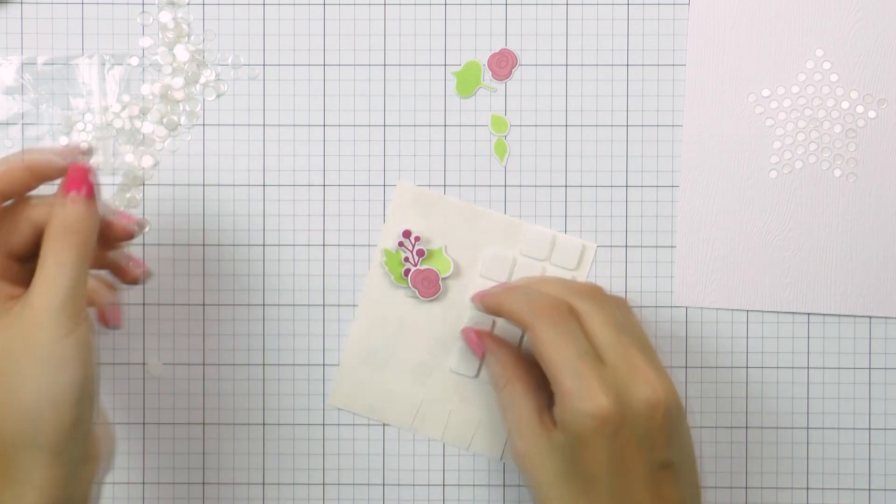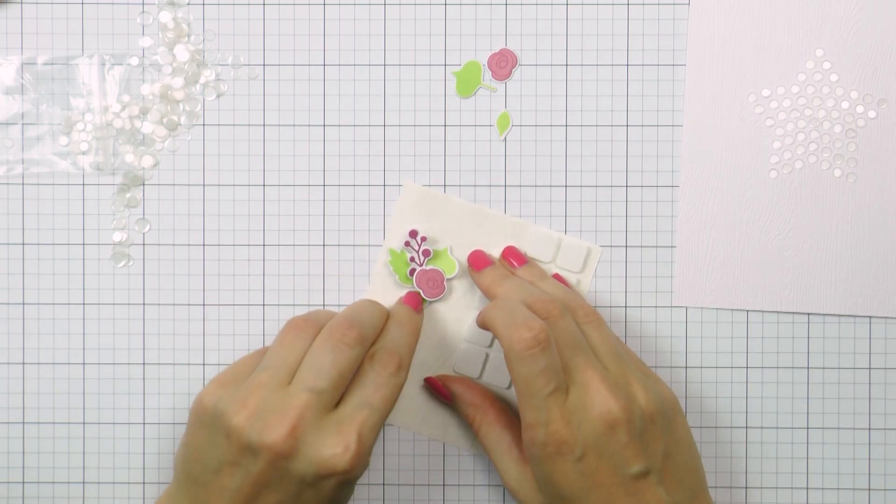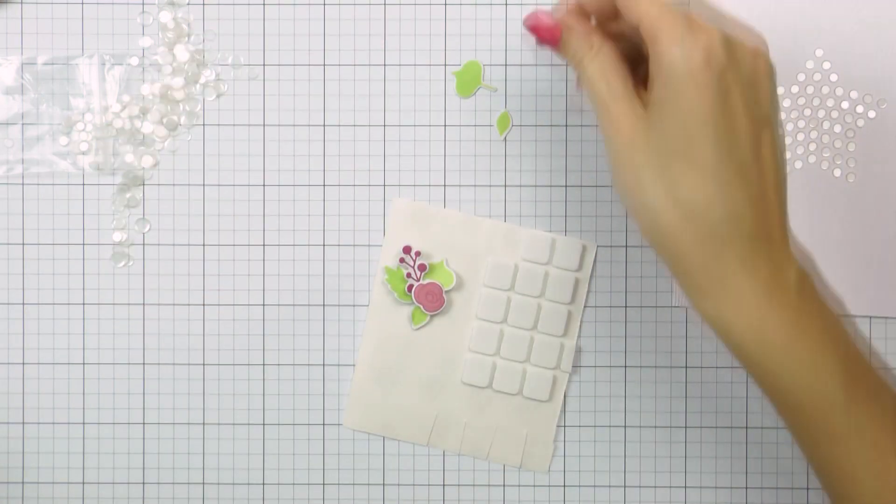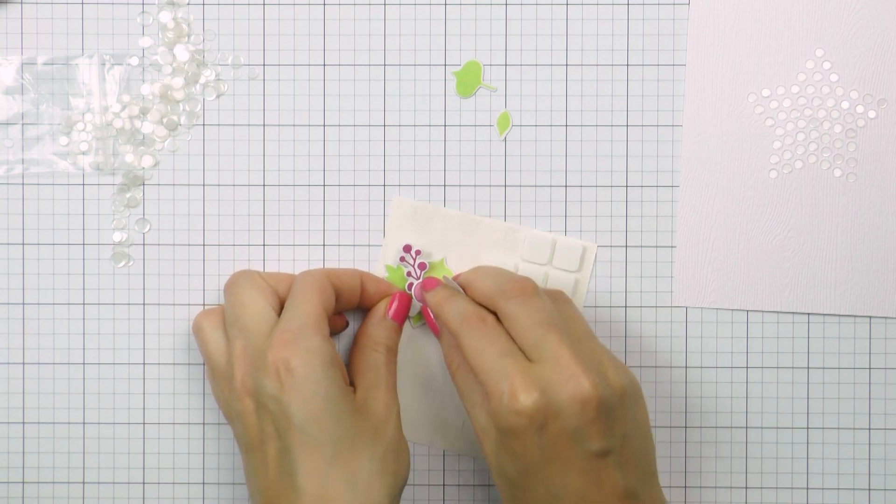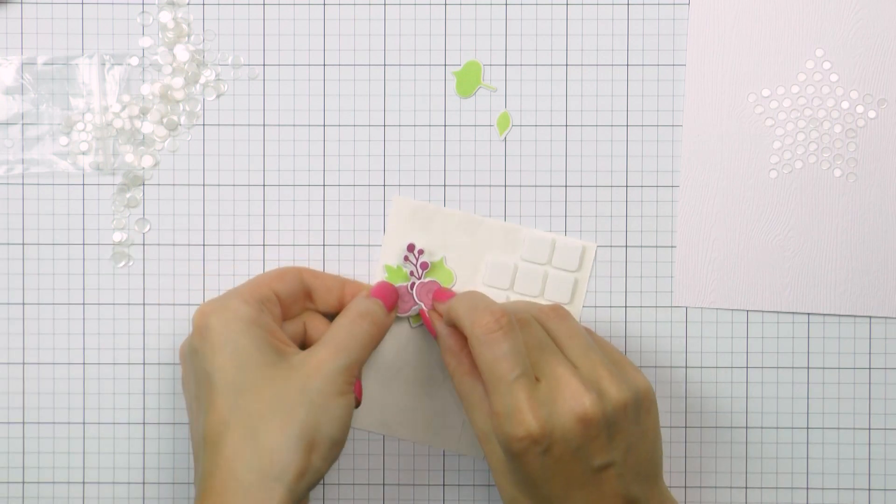So I adhere everything onto the square creating the arrangement that I want and I also add additional foam adhesive as I build my cluster and once I am happy with it I just transfer it over onto the card with the foam square already there.